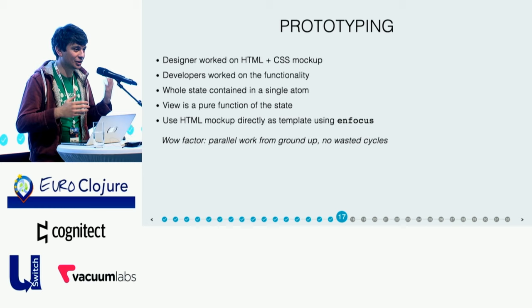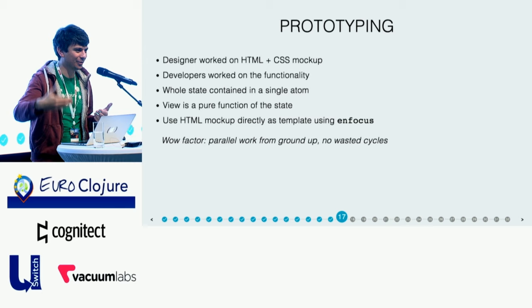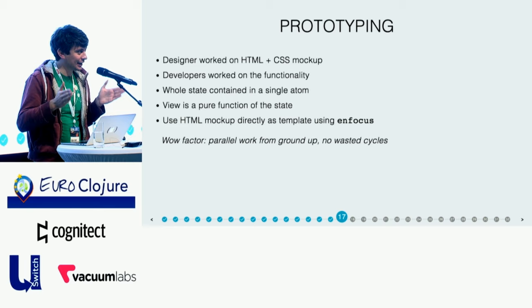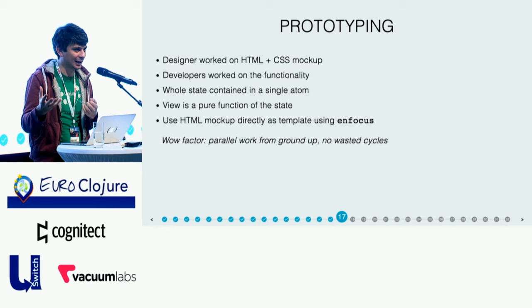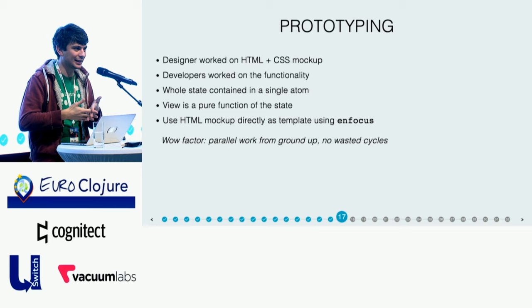Our application needs a lot of state management because of all the edge cases we have with the payment solutions. So this backend of the frontend — I like to call it that — could be developed separately from the actual rendering logic, which was pretty neat. The whole state of the application was contained in a single atom, and the view ended up being just a pure function of that state. So we were working on two parallel tracks, and in the end we just came together using a library called nFocus, which can take pure HTML as a template and add dynamic content to it. From the very beginning, we were able to work in parallel and come together without wasting any cycles in our prototyping.